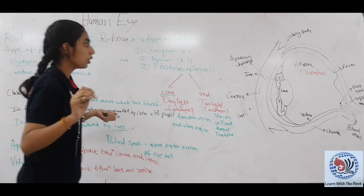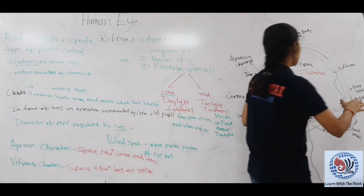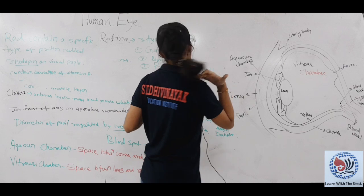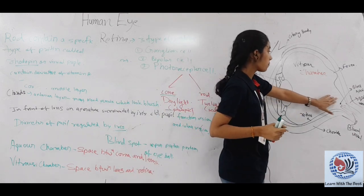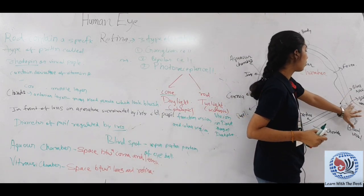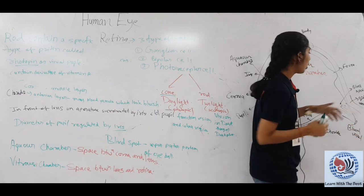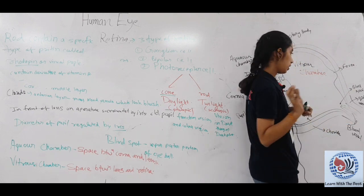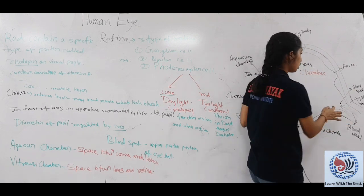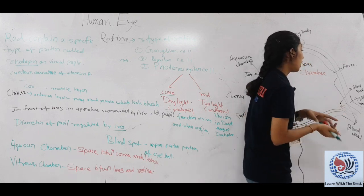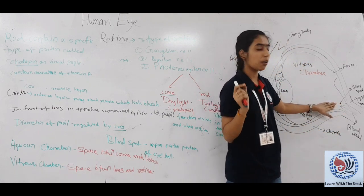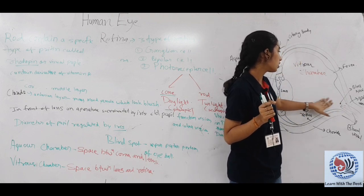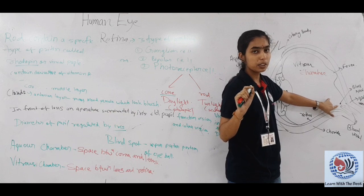Now we will talk about blind spot. Here optic nerve and blood vessel enter, and this is called point or lateral posterior region blind spot. We call it blind spot because photoreceptor cells are absent here.